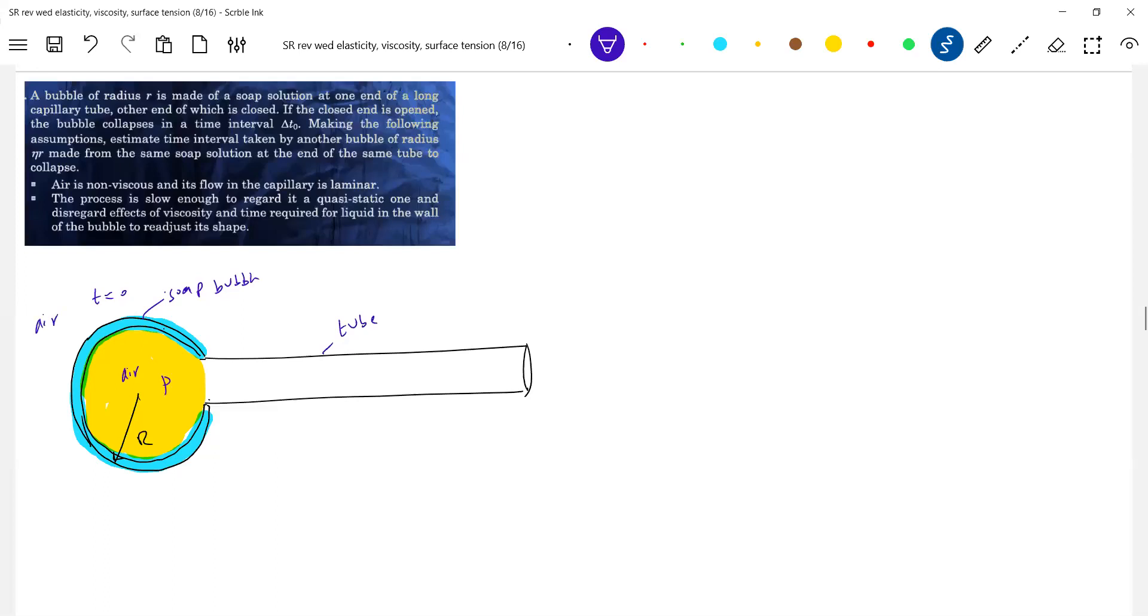So first, directly get into what is the pressure. Outside atmospheric pressure is P0. Not surface tension, anything. We'll write it. P equal to P0 plus 4ST by R.